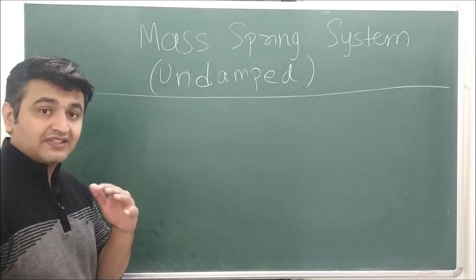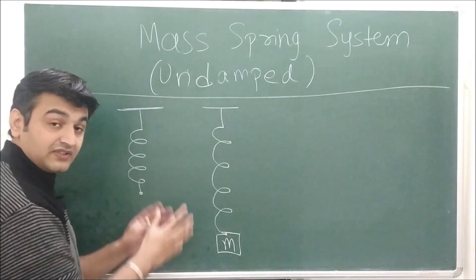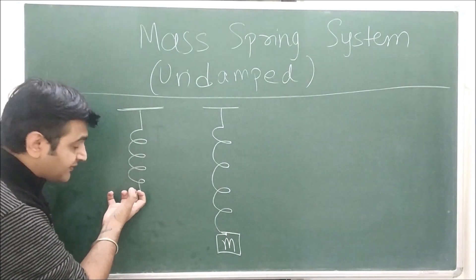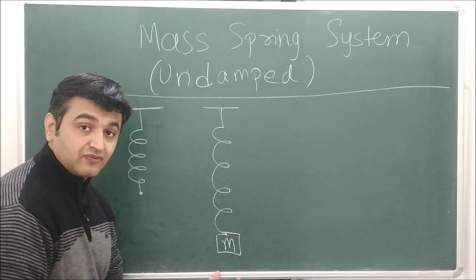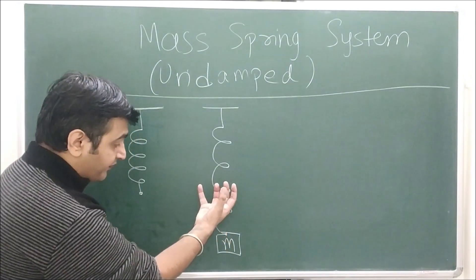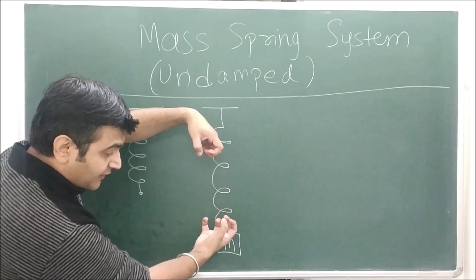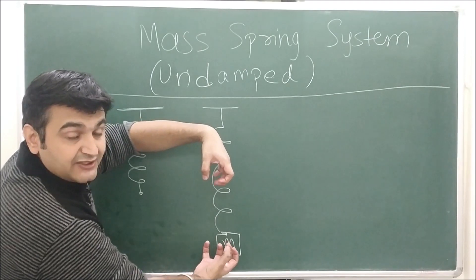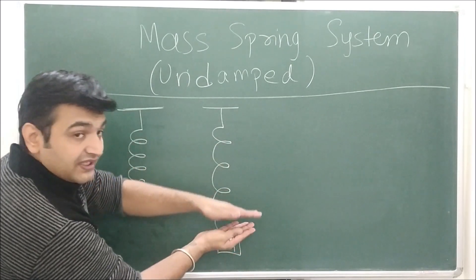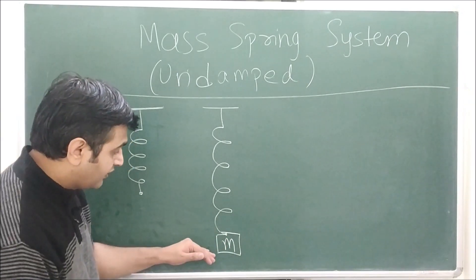Suppose you have a spring and you attach an object of mass m to it. What happens is the spring will go downwards because of the mass of the object and the acceleration due to gravity. At the same time there is a restoring force from the spring pulling upward. The object will come down and stop at the point where the restoring force equals the downward force.